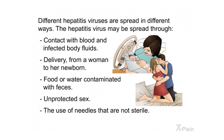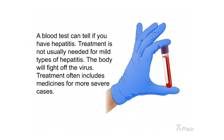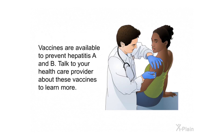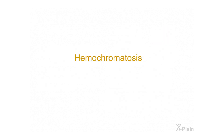Different hepatitis viruses are spread in different ways. The hepatitis virus may be spread through contact with blood and infected body fluids, delivery from a woman to her newborn, food or water contaminated with feces, unprotected sex, or the use of needles that are not sterile. A blood test can tell if you have hepatitis. Treatment is not usually needed for mild types as the body will fight off the virus, but medicines are used for more severe cases. Vaccines are available to prevent hepatitis A and B.